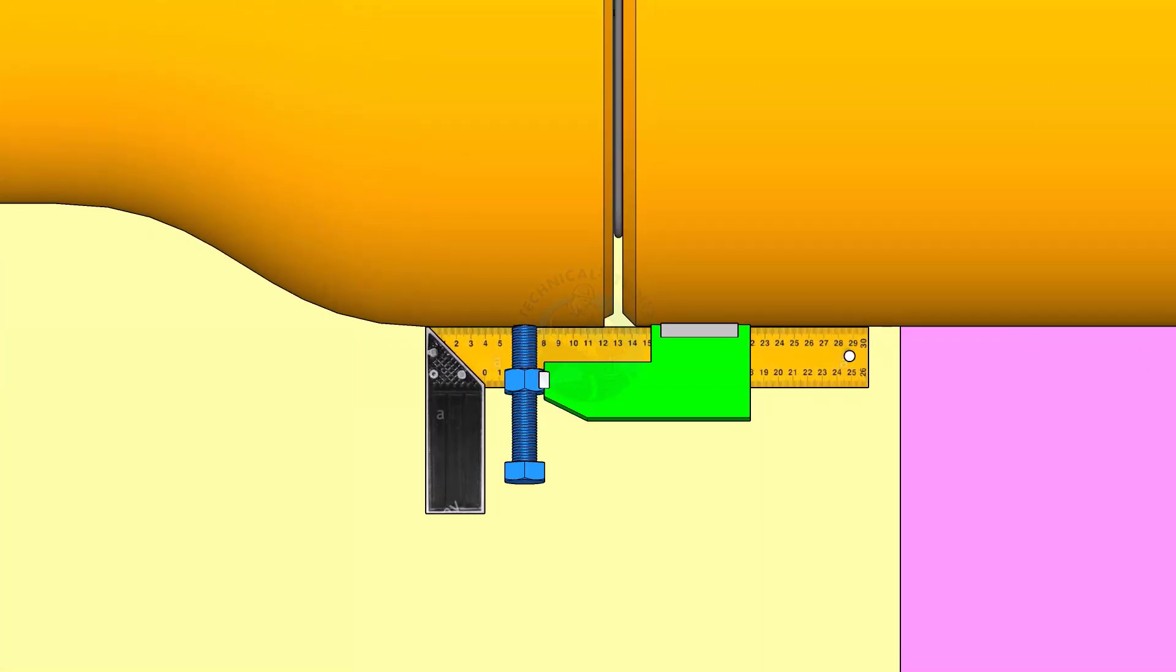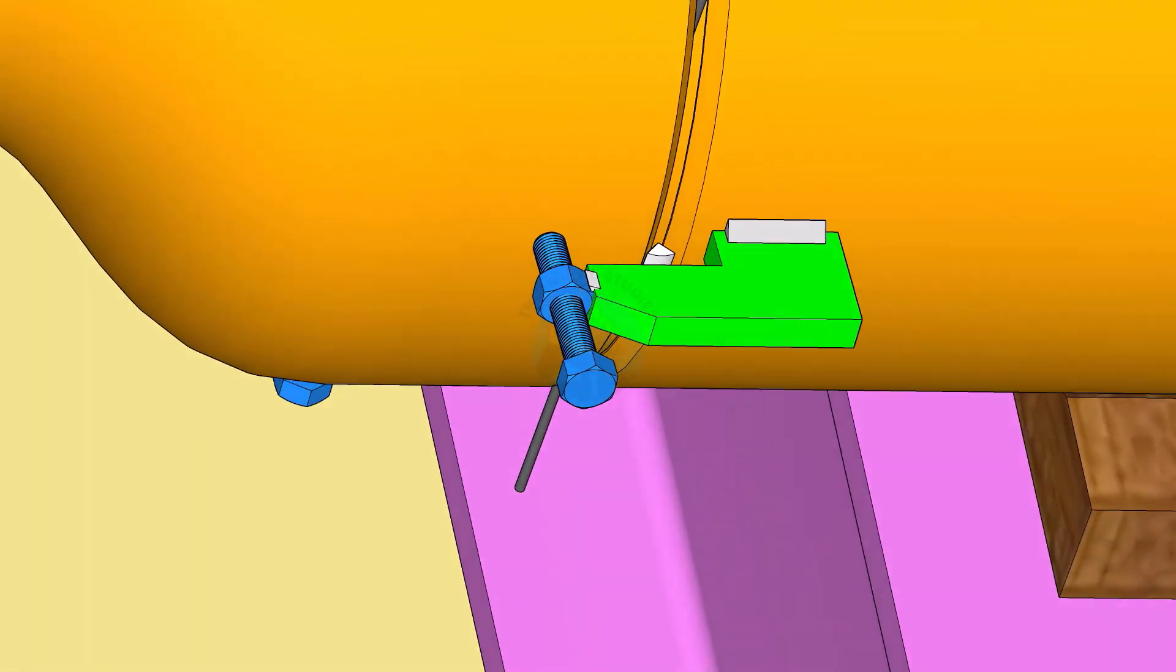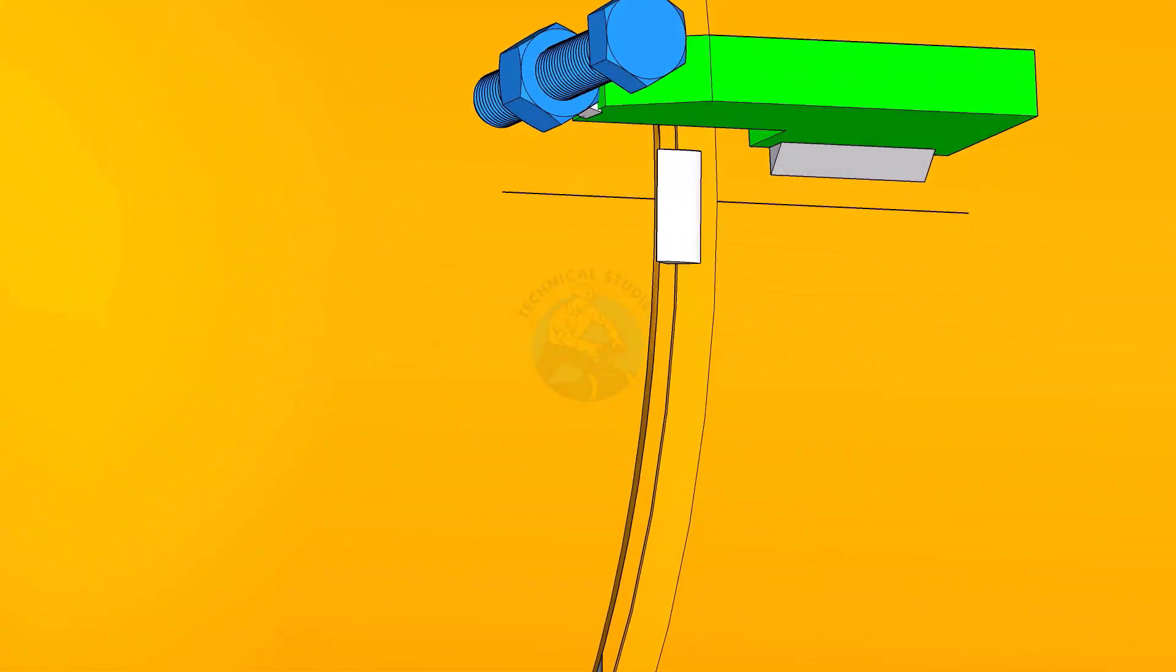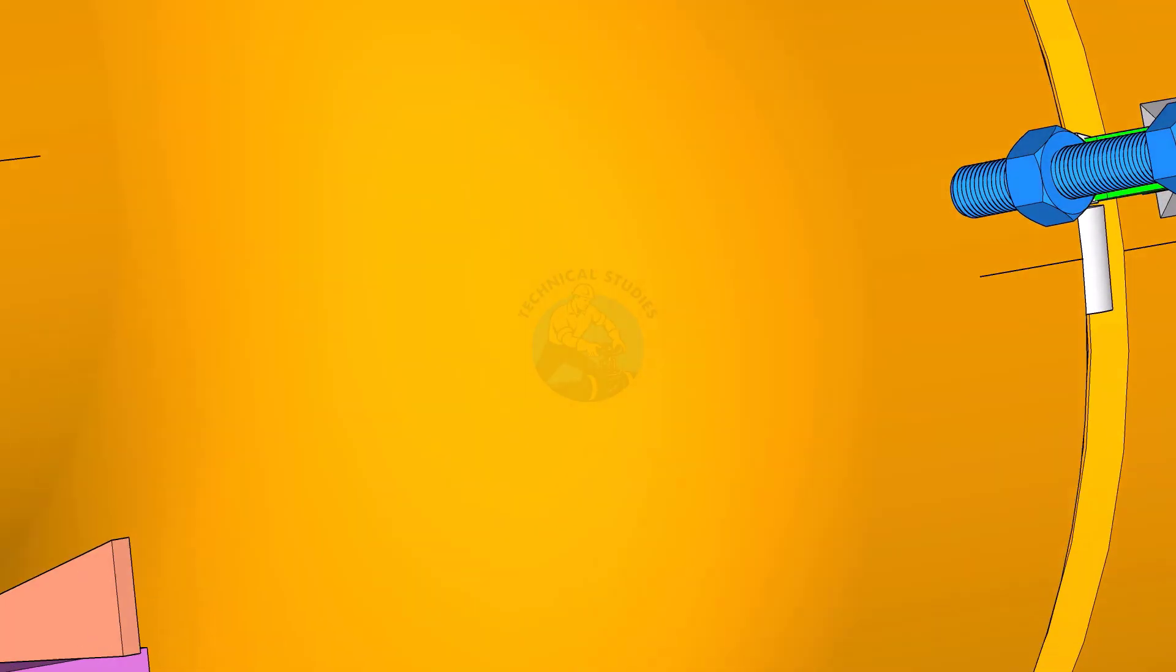Correct the straightness of the joint on both sides. If required, remove the gap rod. Tack weld on both sides.